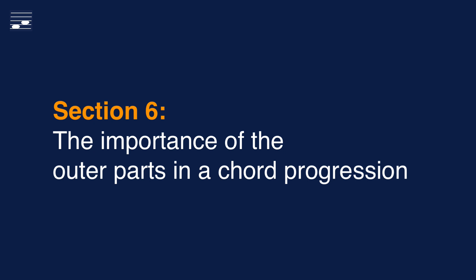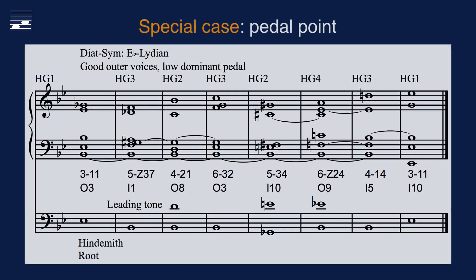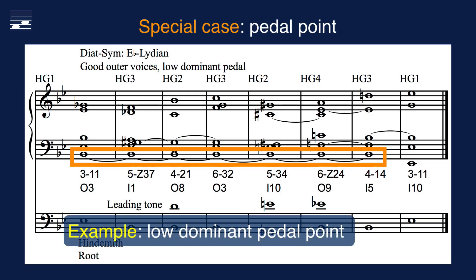With these principles we may begin to write longer chord progressions. But Hindemith points at another remaining aspect: the importance and quality of the outer parts. In the Schillinger diatonic symmetric system we inspect and control the voice leading and the intervals between the upper layer lead part and the diatonic bass part, as I've pointed out in several examples in episodes one to four. Hindemith stresses the importance of the two-part counterpoint between the outer parts. I will show two examples where we meet a special case for outer parts, namely involving also pedal point.